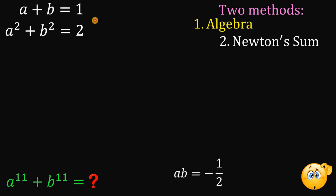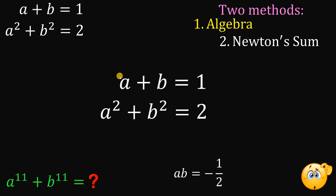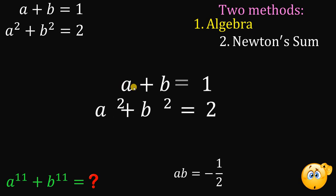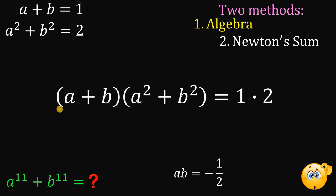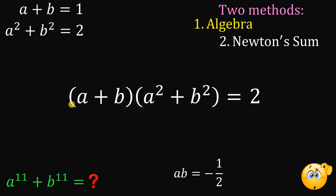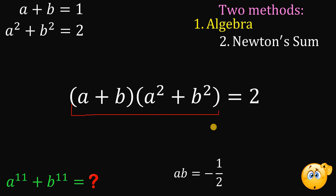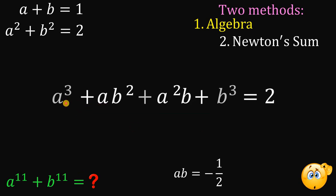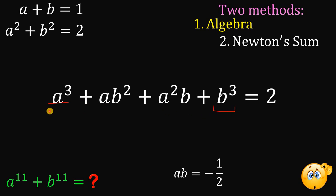Next, let's multiply the two given equations together. The purpose is to get the value of a cubed plus b cubed. Multiplying a plus b by a squared plus b squared gives us a cubed plus ab squared plus a squared b plus b cubed, and 1 times 2 gives us 2. The key terms are a cubed plus b cubed.